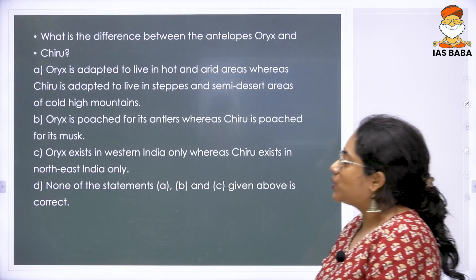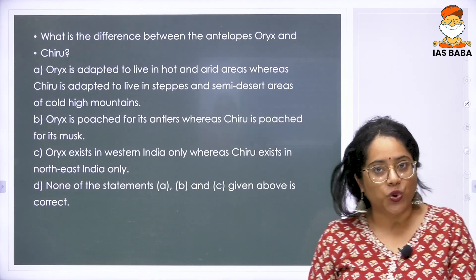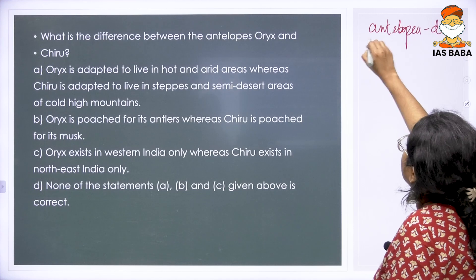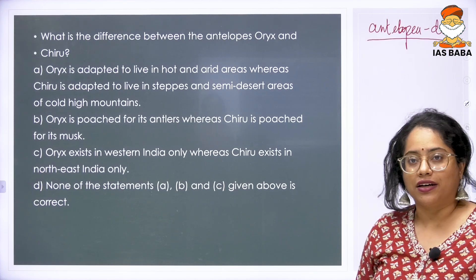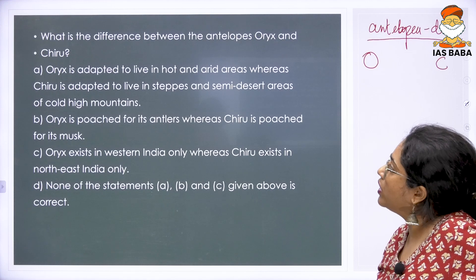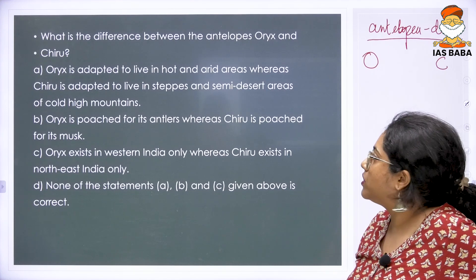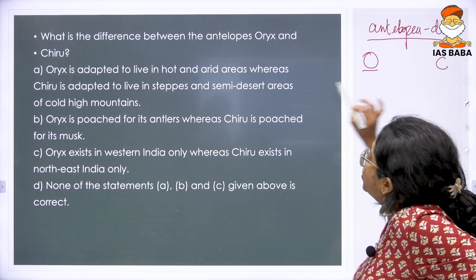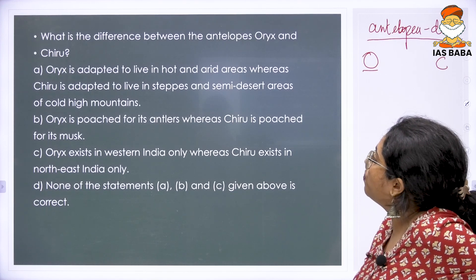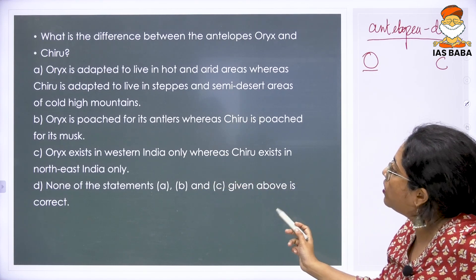Moving forward, the next question is a comparison between two species — the Oryx and the Chiru. Both of them are antelopes, meaning deer species. The first statement reads: Oryx is adapted to live in hot and arid areas, whereas Chiru is adapted to live in steppes and semi-desert areas of cold high mountains. The second statement says Oryx is poached for its antlers, whereas Chiru is poached for its musk. The third says Oryx exists in western India only, whereas Chiru exists in northeastern India only.